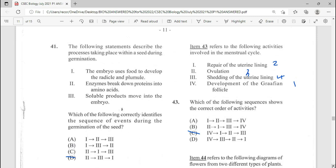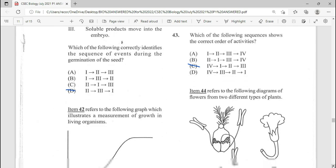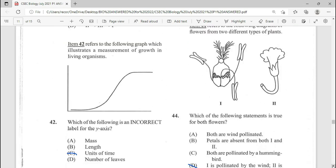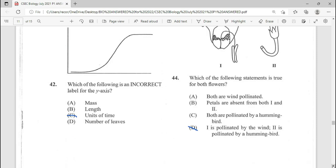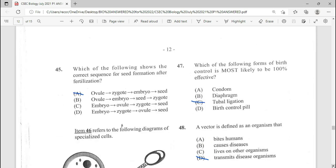Our next question will be 43. Item 43 refers to the following activities involving the menstrual cycle. This is a repeated question. Our answer there being C for 43. 44 is a repeated question. Which of the following statement is true for both flowers? D there being our answer. 1 is pollinated by the wind. 2 is pollinated by the hummingbird. A repeated question.